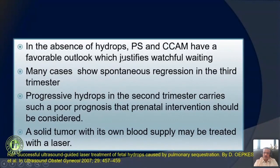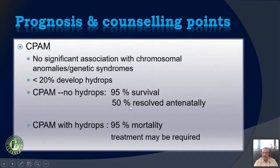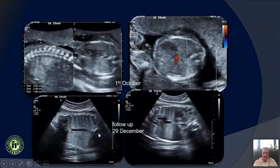When you see progressive hydrops coming up in the second trimester, the prognosis may be bad, and in some cases once there is hydrops, we may think of doing an intervention. For counseling in CPAM: there is no significant association with chromosomal abnormality or syndrome, which is reassuring. Less than 20% develop hydrops. With no hydrops, CPAM has a very good survival rate and almost 50% resolve antenatally. With hydrops, mortality goes up significantly to 90 to 95%, and some may need in-utero intervention.